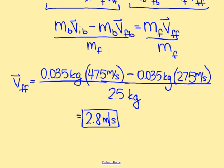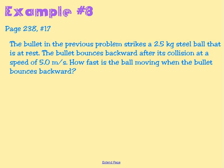That's a reasonable number — it shouldn't be too high because it's a pretty massive bag of flour, about a 5-pound bag. One more problem for this video: again using the same bullet, it strikes a 2.5-kilogram steel ball that is at rest. The bullet bounces backward after the collision at a speed of 5 meters per second. How fast is the ball moving when the bullet bounces backward?